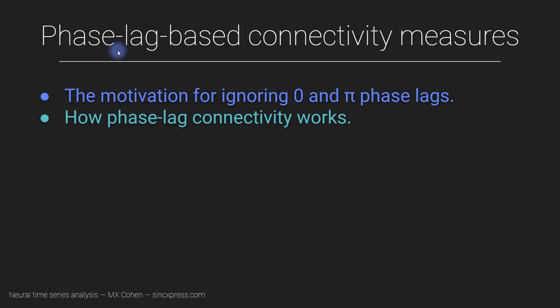I'm going to introduce you to phase lag based connectivity measures. These are connectivity measures based on phases and phase clustering, similar to the phase synchrony or phase clustering methods introduced a few videos ago, but based on phase lags. First, I'll introduce the motivation for ignoring phase angle differences of zero or pi radians, then introduce the phase lag index — the simplest of this family of synchronization methods.